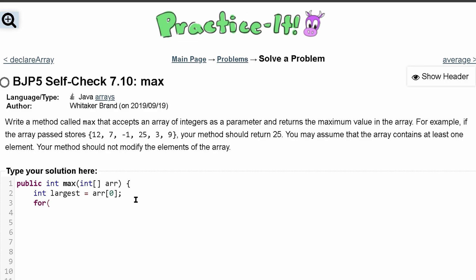Now since we want to look through every single index of our array, we can use a for loop to do so. We'll do int a is equal to 1. We'll start it at 1 because we already have this index 0.